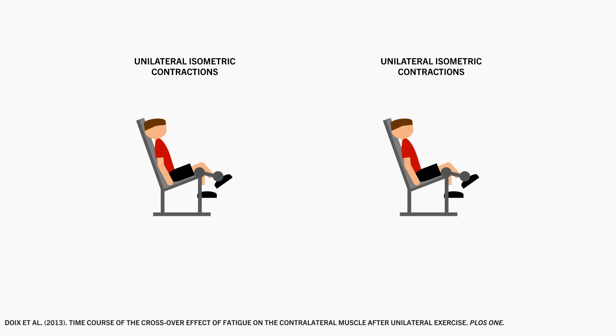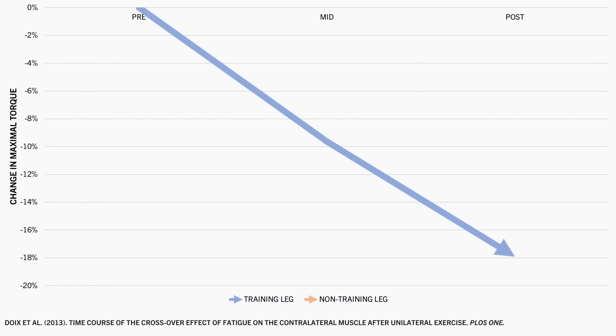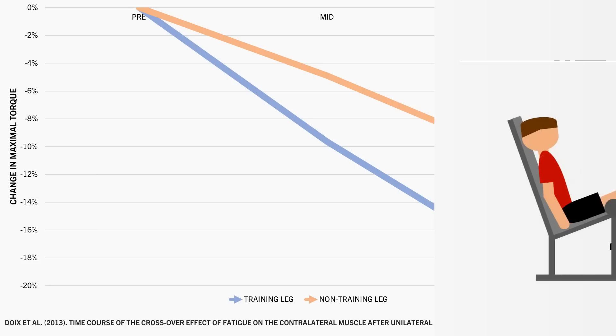This was seen in this study which explored how training one limb affects fatigue of the other limb. Trainees performed two sets of 100 second maximal isometric contractions on a leg extension machine with only one leg. Before, after the first set and after the second set, isometric strength was measured with both the leg being trained and the non-training leg. As expected there was a gradual decline in maximal strength of the leg being trained since it was the one being fatigued. However there was also a gradual decrease in strength of the non-trained leg, although not quite as much of a drop-off as the trained leg.